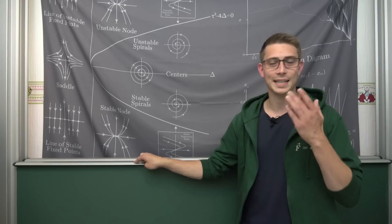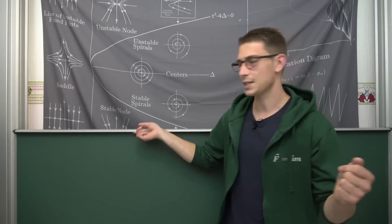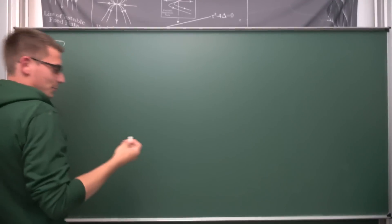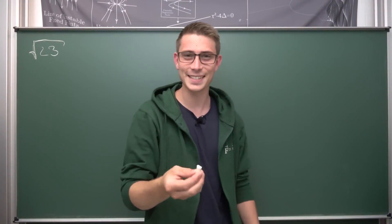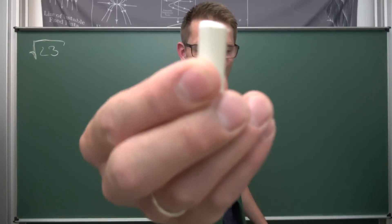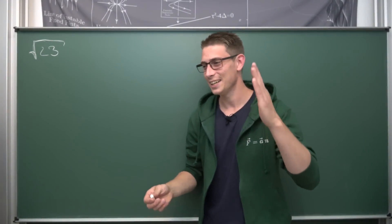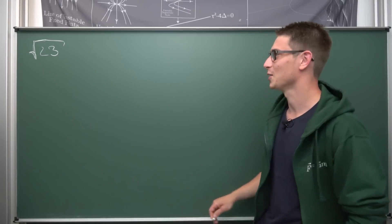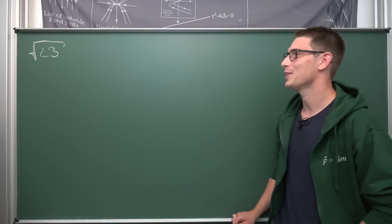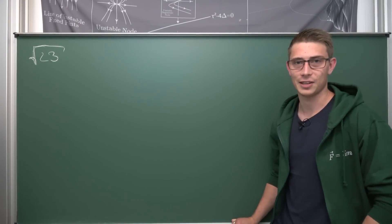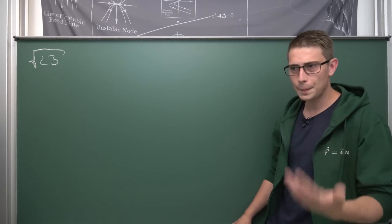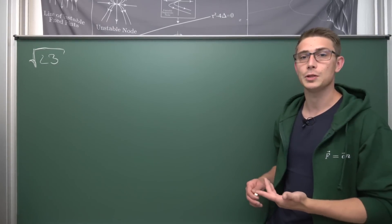So let us take a look at the square root of 23, the one I talked about at the very beginning. Square root of 23. How would you approximate something like this? As mentioned, it's kind of close to 5 and bigger than 4 — it's bounded in between.